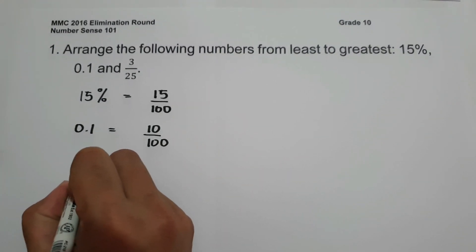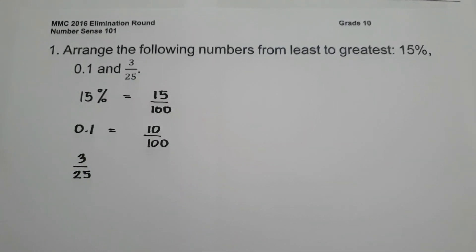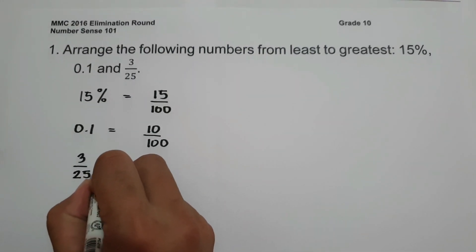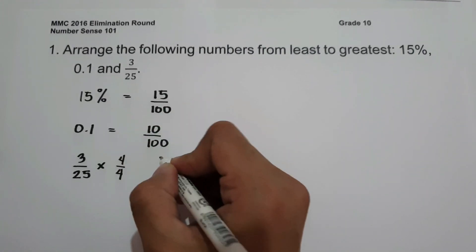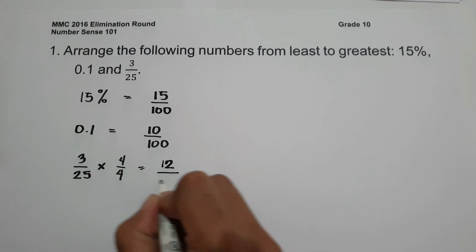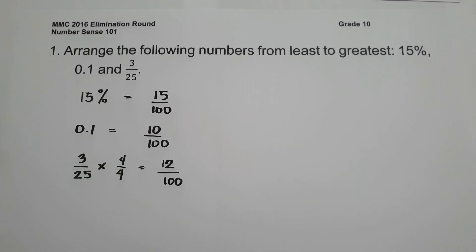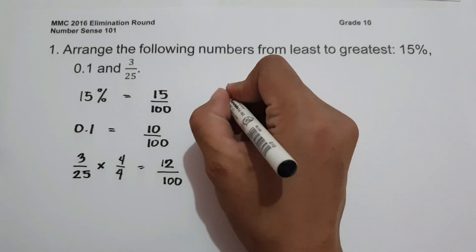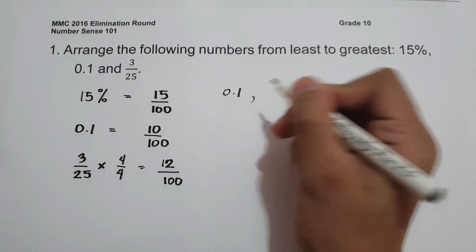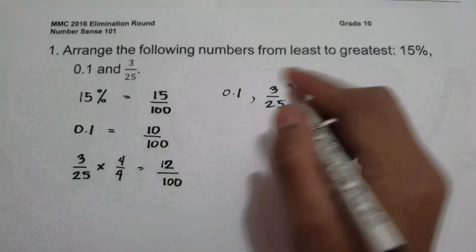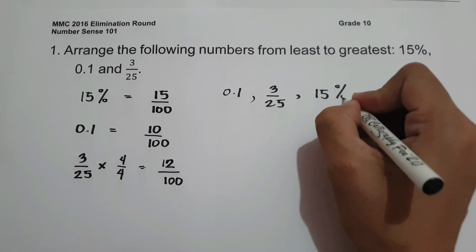What about 3 over 25? How can we make 3 over 25 have 100 in the denominator? We multiply by 4 over 4, giving us 12 over 100. So we can now easily identify the order from least to greatest. Writing the original forms, the answer is: 0.1, followed by 3 over 25, and then 15%.